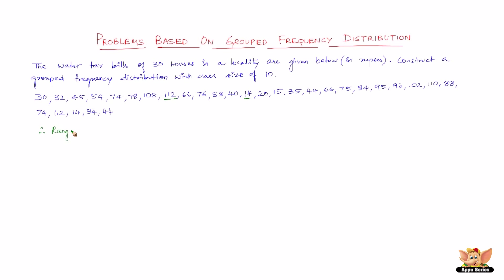So therefore the range: 112 minus 14, which is 98. So the range is 98. It is given that the class size is 10. So therefore range by class size gives us 9.8. So therefore we should have 10 classes each of size 10.